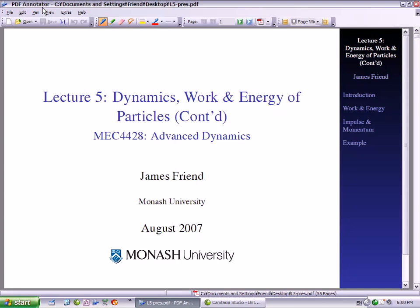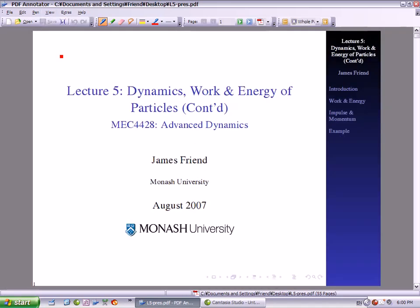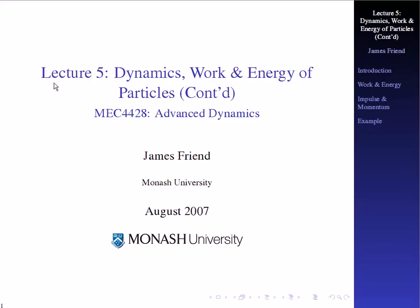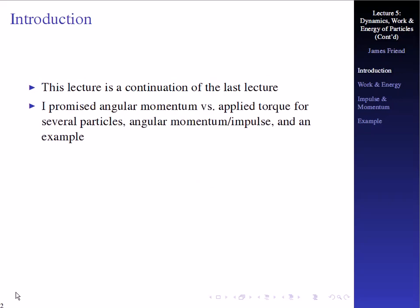Welcome to the fifth lecture of Dynamics of Work and Energy of Particles. This is basically a continuation of the fourth lecture. We talked about having angular momentum versus applied torque for several particles, angular momentum and impulse, and an example. I promised all that in the last lecture but didn't quite deliver it, and this is what we're going to be talking about this time.